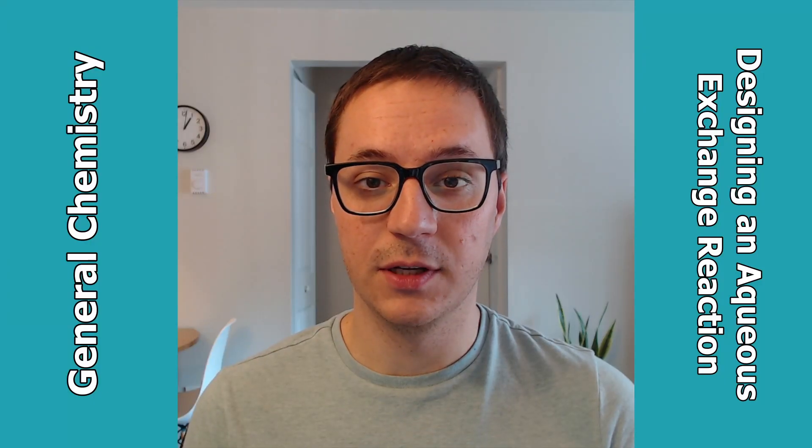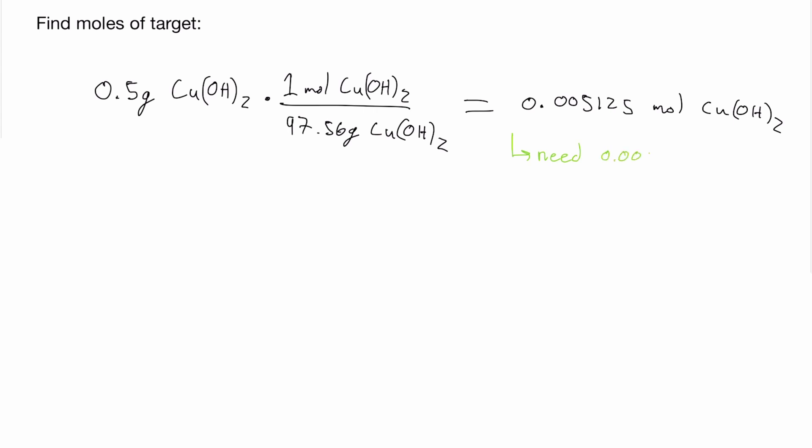According to the stoichiometry of the equation, this means we need the same number of moles of copper ions and twice that number of moles of hydroxide ions.